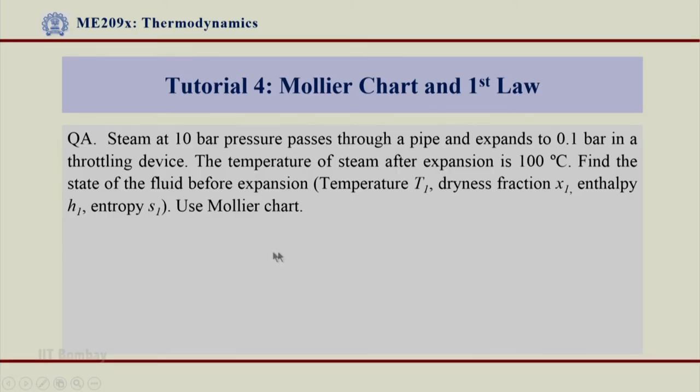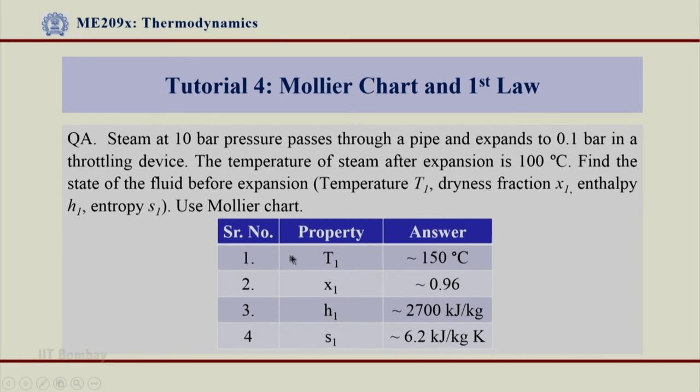If I go to my slides and write down the answers properly, I can get the answers as T1 equal to 150 degree centigrade, x1 is equal to 0.96, h1 is equal to 2700 kilojoule per kg Kelvin. One can appreciate from this problem, how efficiently we could get these answers from the Mollier chart and that is the purpose. That is I could understand that the state 1 lies in two phase region, while I could understand state 2 lies in a superheated zone which one could see directly from the Mollier chart. I did not have to do any calculations further to understand these aspects. Thank you very much.